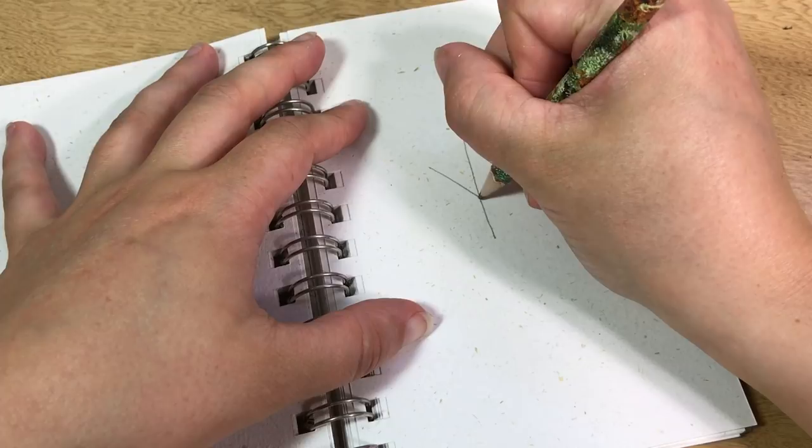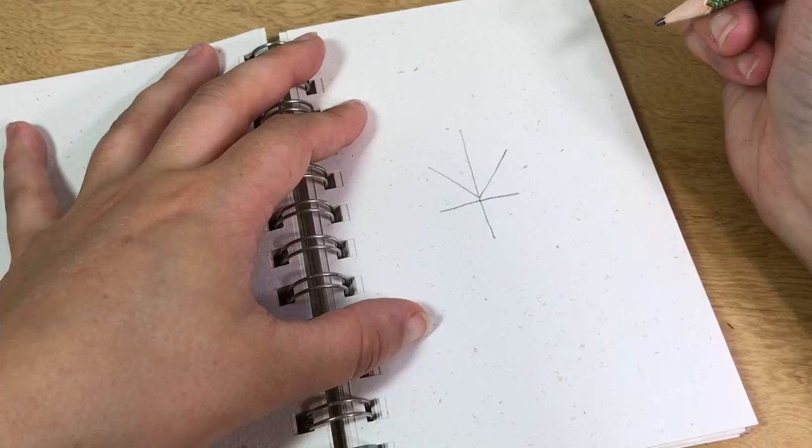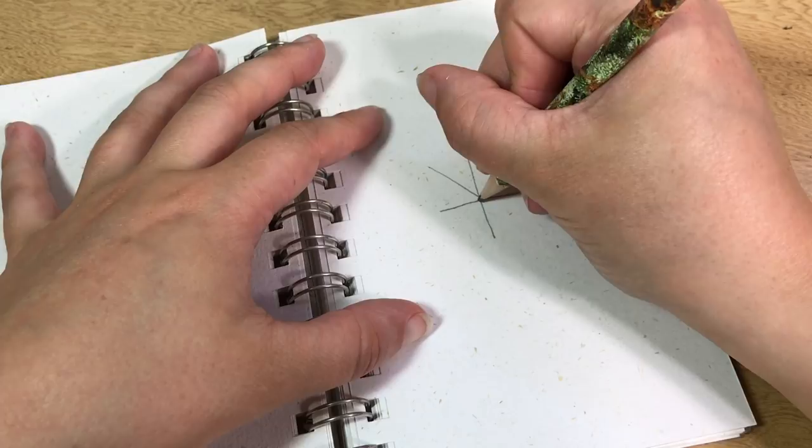so you want them kind of straight and shorter than the lines that you just drew before this, but these lines can go up or down a little bit, they don't need to be totally straight. Now we